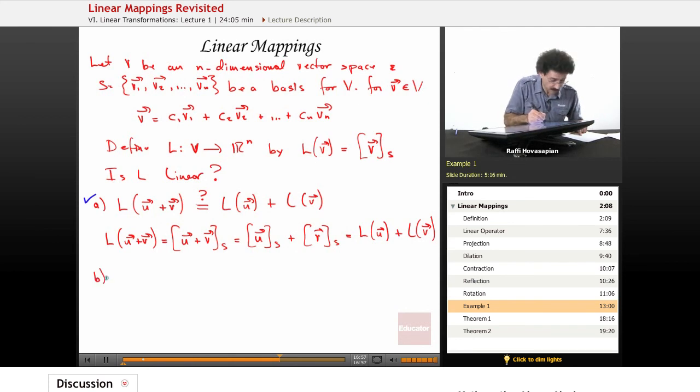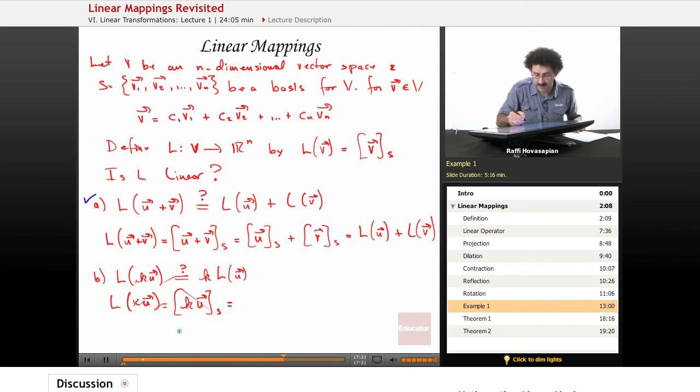So now let's do part B. We need to show that L of K times U, does it equal K times L of U? Well, L of K times the vector U is equal to the coordinate vector of K times U, but the coordinate vector of K times U with respect to S is equal to K times the coordinate vector of U with respect to S. That's equal to K times L of U because that's the definition. So we've shown that L of KU equals K times L of U. So yes, B is also taken care of.